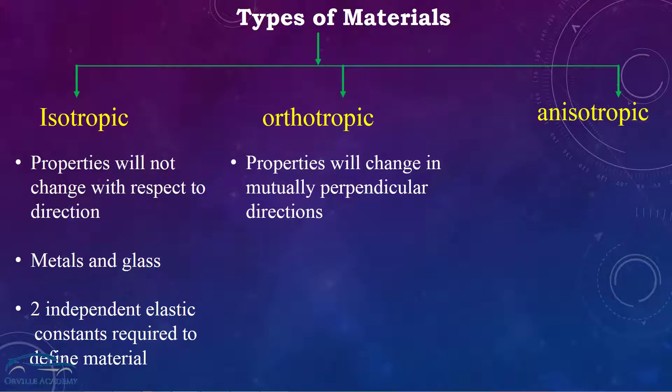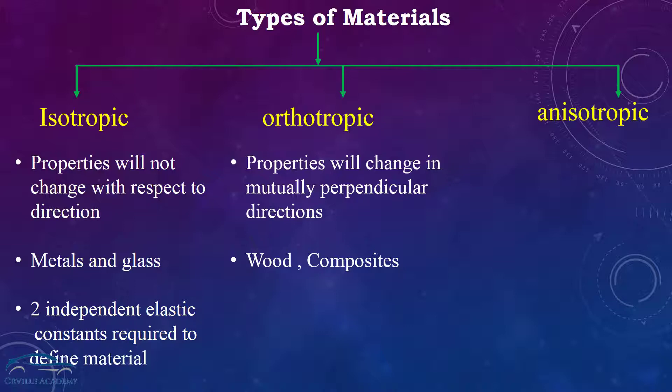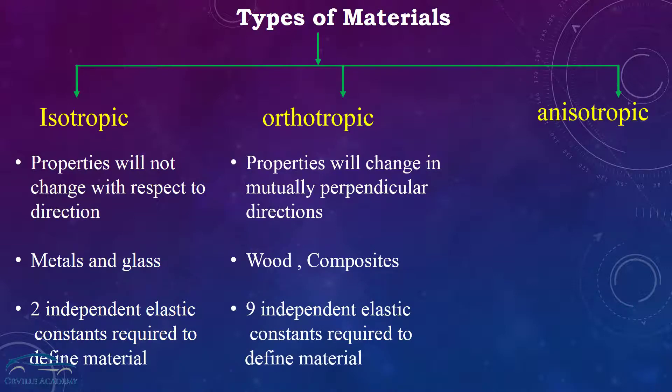Common examples of orthotropic materials are woods and composites. In order to completely define the orthotropic material in any FEA software, we will require 9 independent elastic constants.